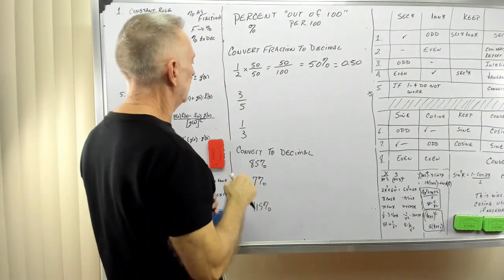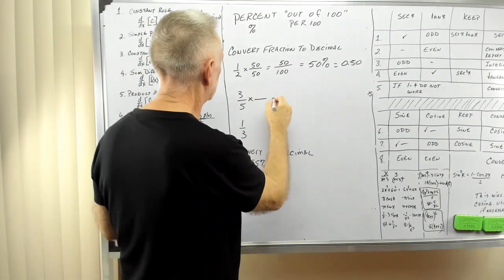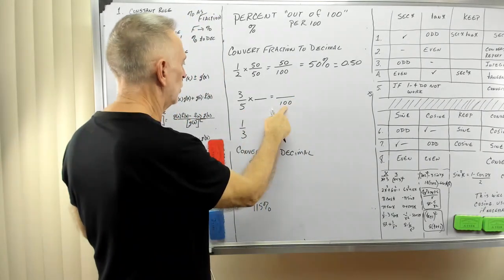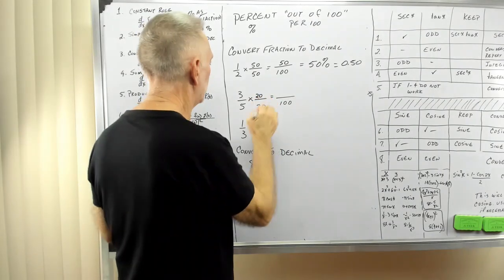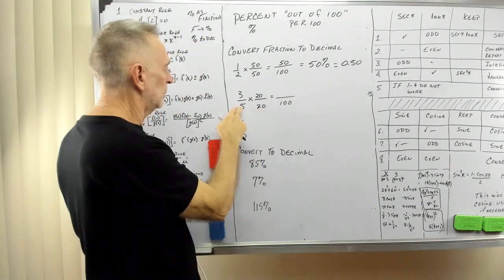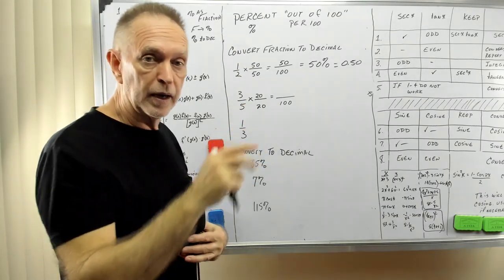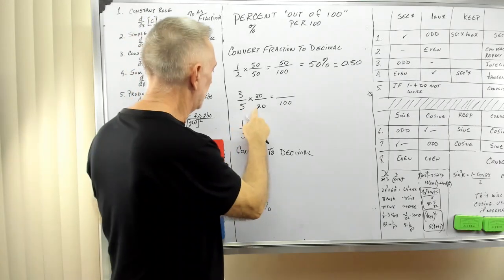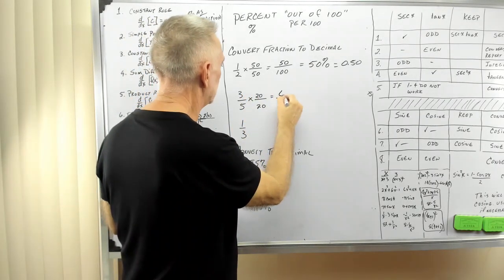0.5 is the same as 50%, which is the same as one half. 50% is half of something. How cool is that? Let's keep rolling. Three out of five. Well, I've got to multiply that by something to get the denominator to equal 100. 100 divided by 5 is 20. So, if I multiply this fraction by 1, and I'm representing my 1 as 20 over 20. Now then, 5 times 20 is 100. 3 times 20 is 60.